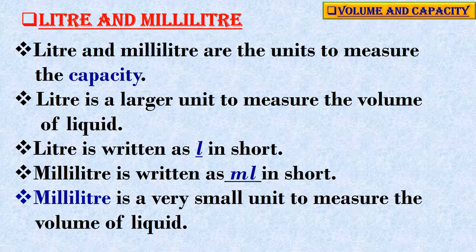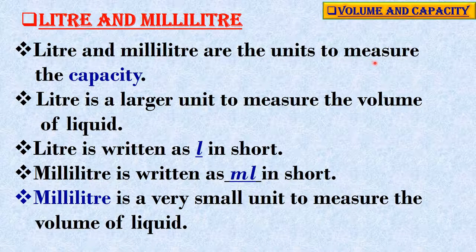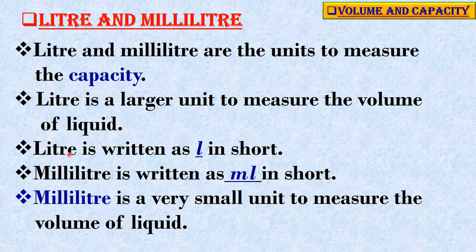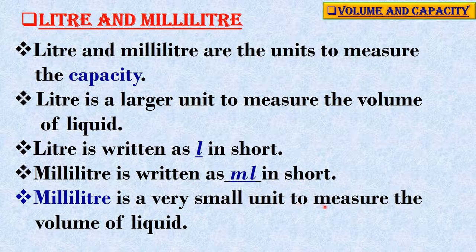Summary: Litre and millilitre are the units used to measure capacity. Litre is a larger unit to measure the volume of liquid, written as L in short. Millilitre is a very small unit to measure the volume of liquid, written as ml in short.